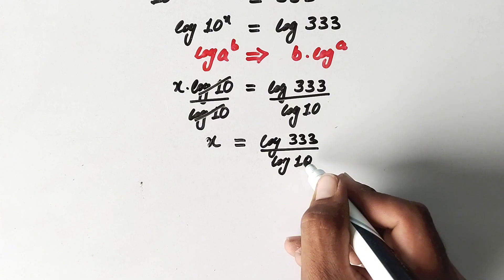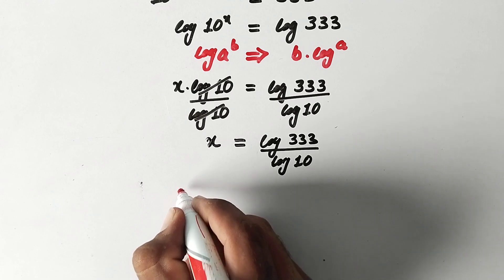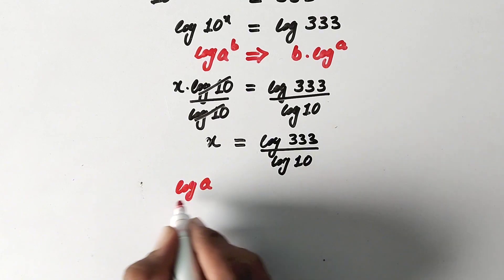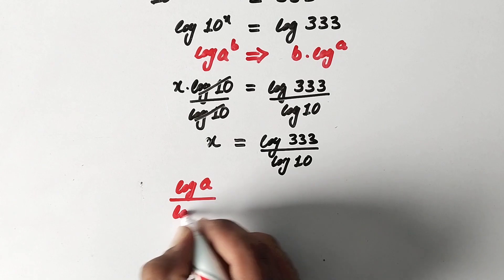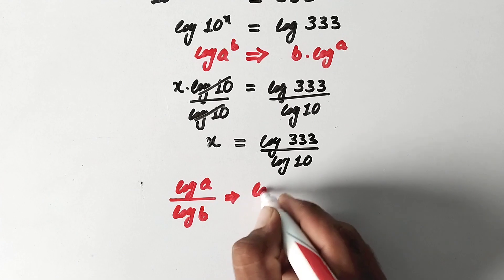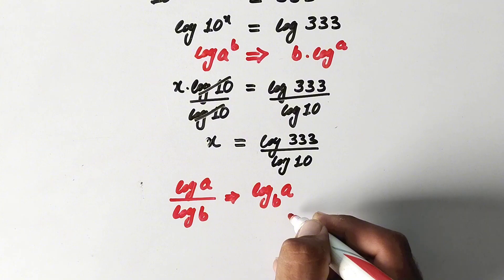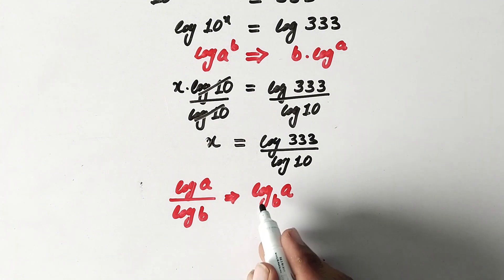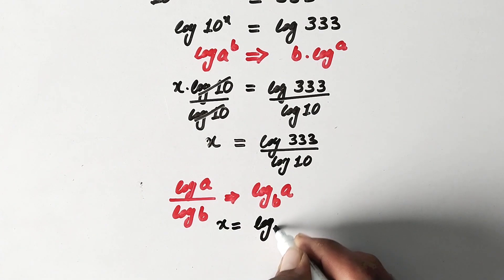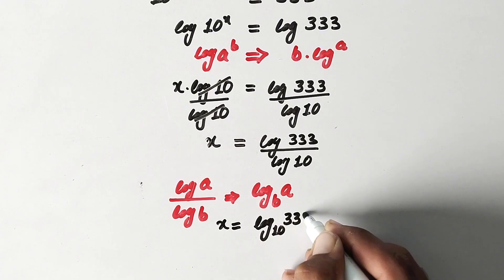And now here again we will apply a property of log. As we know that log a over log b can also be written as log to base b times a. So according to this property we can write this term as x equal to log to base 10 of 333.